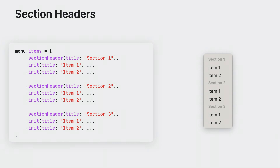Section headers are a new addition that aid in conveying groups in your menu and can be created with a single line of code. Use the new class function sectionHeaderTitle to create one and add it to a menu like any other menu item. In this example, three menu sections are created, each with a section header and two items.